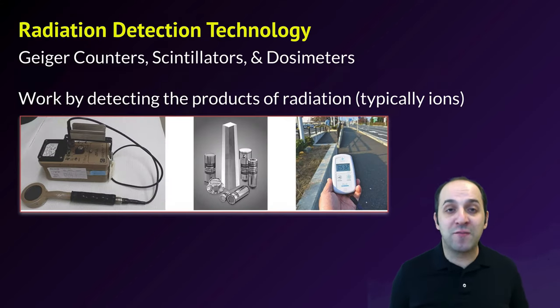Because we don't want to be exposed to additional radiation over our natural background level, we do have a series of technologies that have been developed to help us detect radiation, because we can't feel it and we can't see it with our eyes. So Geiger counters, scintillators, and dosimeters, as you see here, each one shown from the left over, are examples of radiation detection technology.